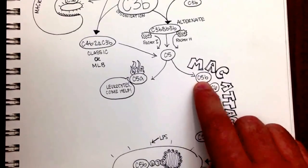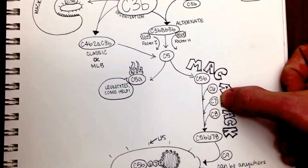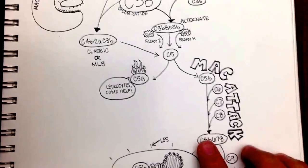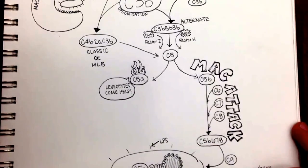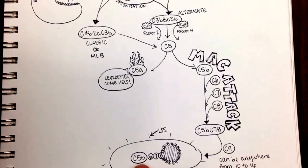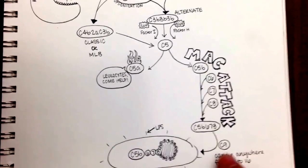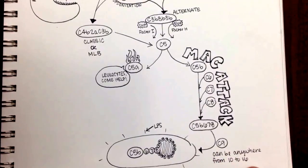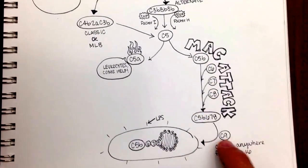So C5b will pick up C6, C7, and C8 to make a C5b678, which if you see here bound to this bacteria, C5b678, will start to pick up nines. And it can pick up from between 10 to 16 nines, these C9s.